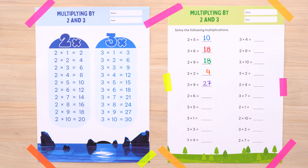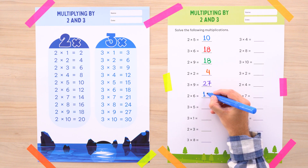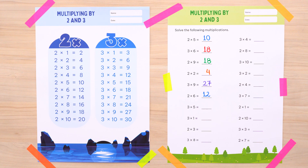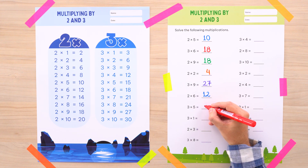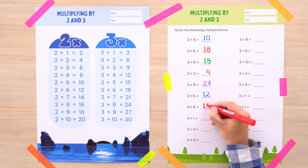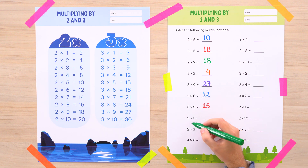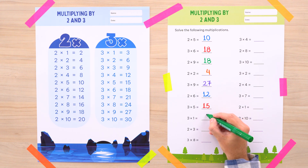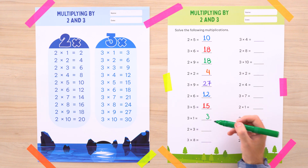Now we have 2 times 6, and 2 times 6 equals 12. Yes, 2 times 6 is equal to 12. One more: now we have 3 times 5, and 3 times 5 is equal to 15. Yes, 3 times 5 is equal to 15. Let's continue with 3 times 1 — 3 times 1 is... piece of cake. 3 is the correct answer — 3 times 1 equals 3.